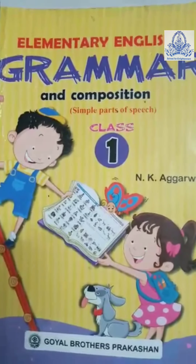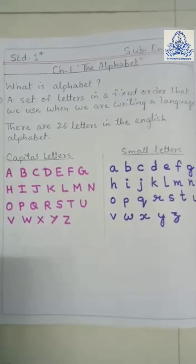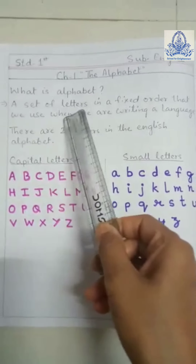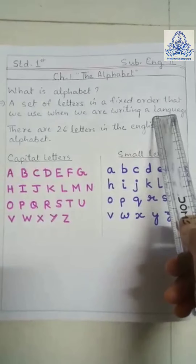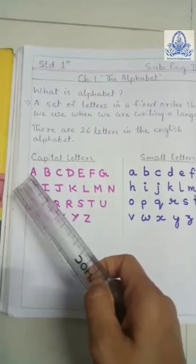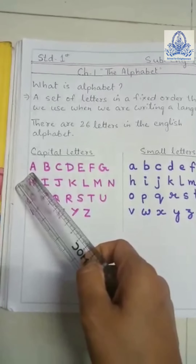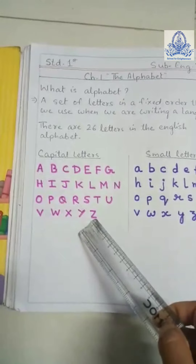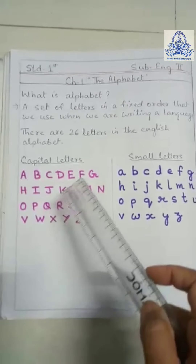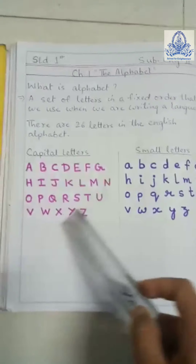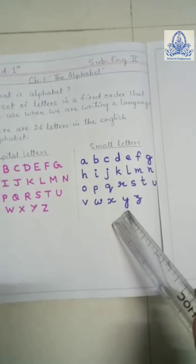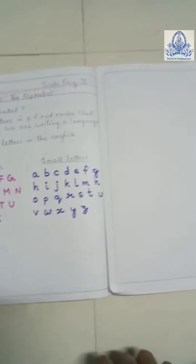Hello dear students, today we are going to learn elementary English grammar and composition for standard first, chapter 1: the alphabet. What is an alphabet? A set of letters in a fixed order that we use when writing a language is called an alphabet. If it is only one letter, it is called a letter, and a set of letters A to Z is called an alphabet. There are 26 letters in the English alphabet — capital letters and small letters.